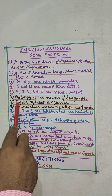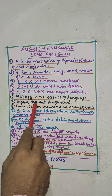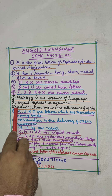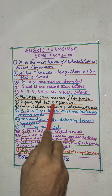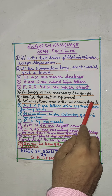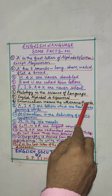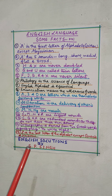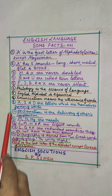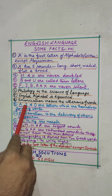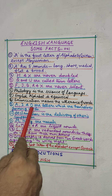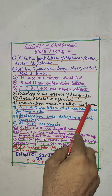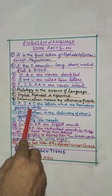The next point is that the English alphabet is equivocal. Enunciation means the utterance of words — this word you might be reading in question papers also. The next point is that A, I, and O are letters which are themselves forming words, meaning these letters singly form words.